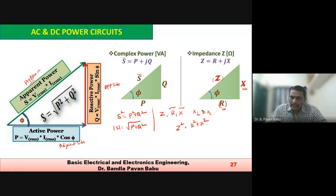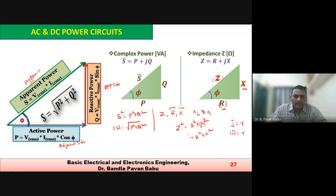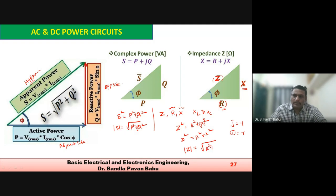Actually it should be (jX)² — the value of j is √(-1), so j² = -1, and (-1)² becomes 1. That is why it is R² + X². So the magnitude of Z equals the root of R² + X².